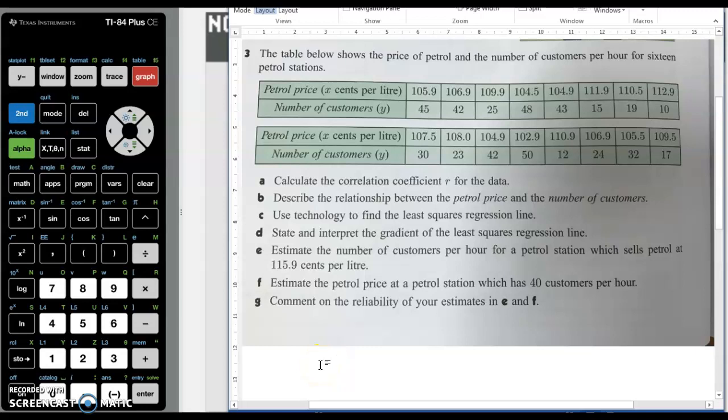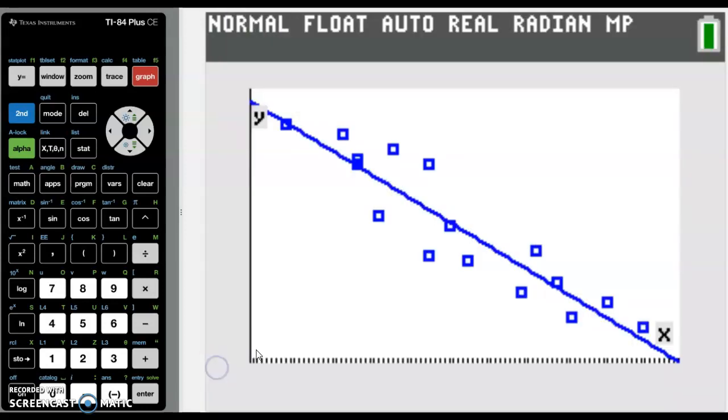In my last video on bivariate data, we looked at this question from a Hazy and Harris textbook, Year 12 General Maths. And it produced a scatter plot like this. But normally the second part to this sort of question is to produce a residual plot.